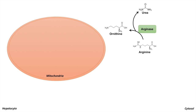So where does the arginine actually come from? This is where the cycle gets a little more complex. The whole point of the urea cycle is to remove ammonia or ammonium, and this comes from amino acid metabolism. Whenever you have amino acid metabolism, you have ammonium production. The ammonium gets brought into a mitochondria in the hepatocyte, and CO2 gets brought into the mitochondria as well.